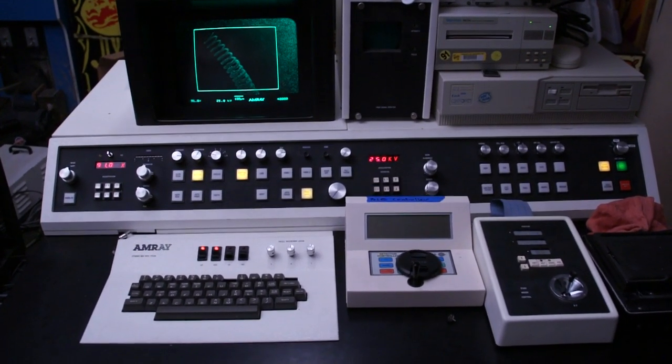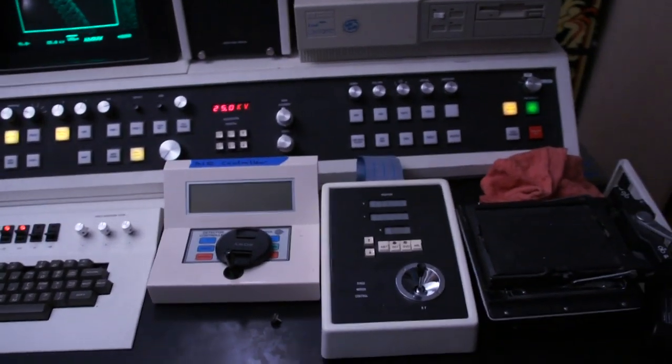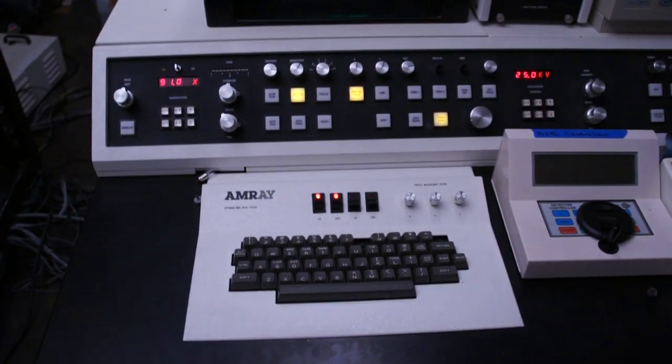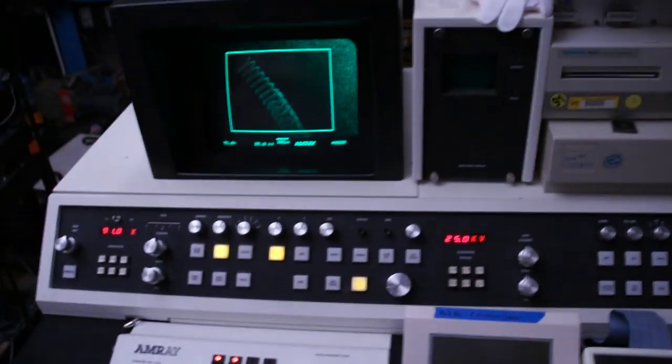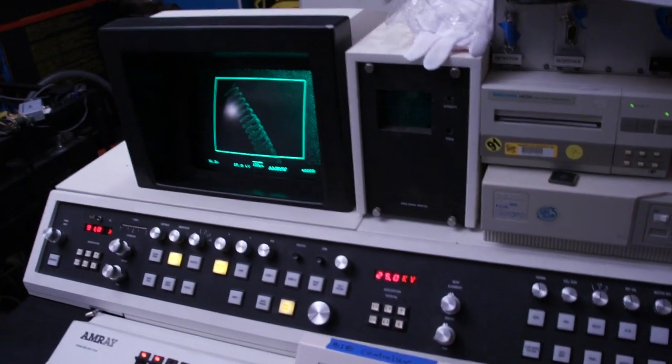This is an Amore 1800 field emission. Here's the console. This thing looks really high-tech with all these buttons. It'd be great for a B sci-fi movie. So if I ever do one, you'll probably see this in it.